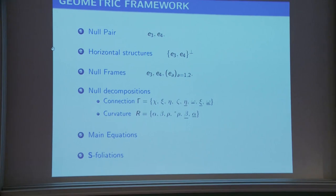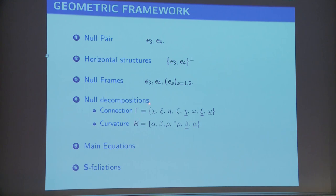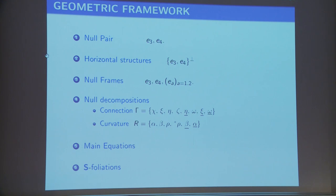Then you write down the main equations — the Cartan equations, which are: derivatives of gamma plus gamma times gamma gives you the curvature. This is one system of equations at the level of gamma. Then you have Bianchi identities for R. So the main equations are the Cartan equation plus the Bianchi equations. Another important thing to mention is the S-foliations — foliations induced by E3, E4. If this thing is not integrable, you cannot talk about foliations.